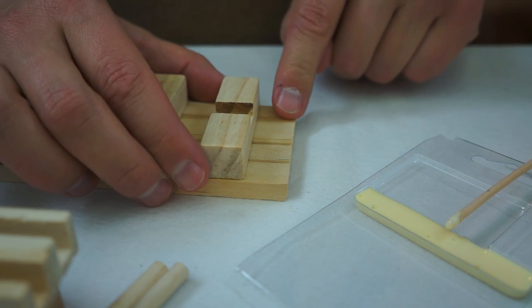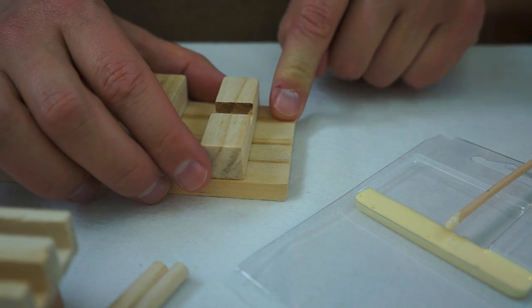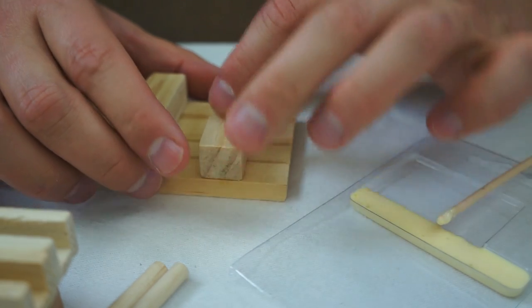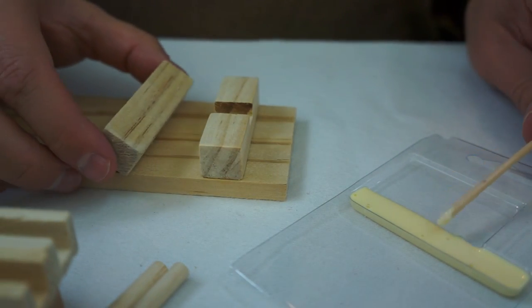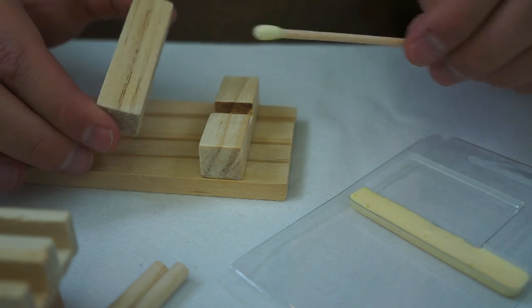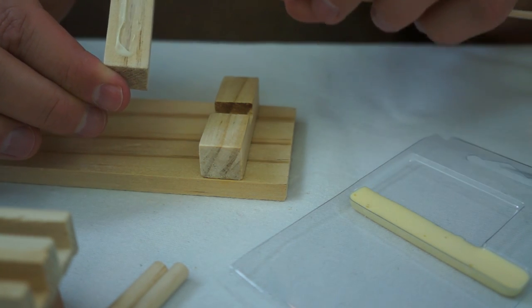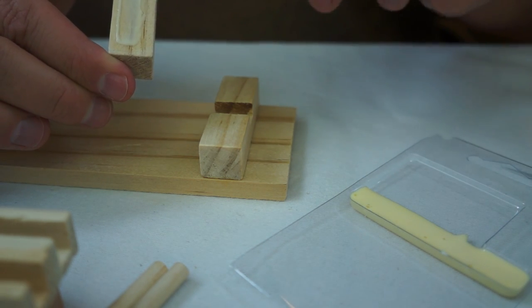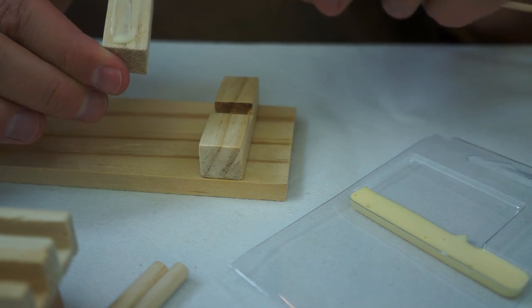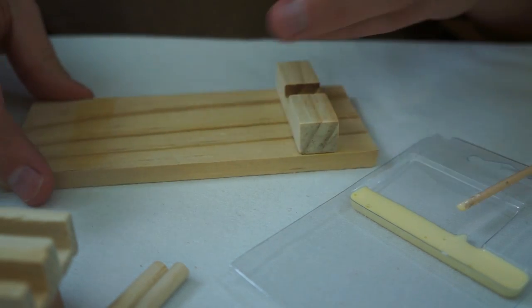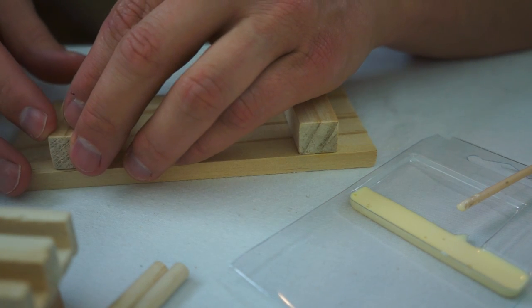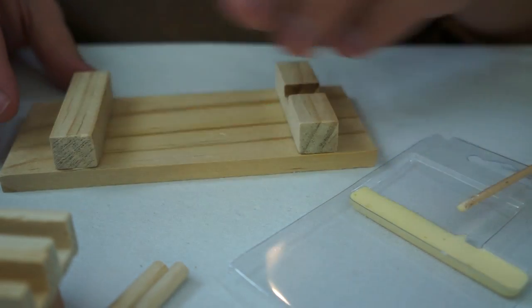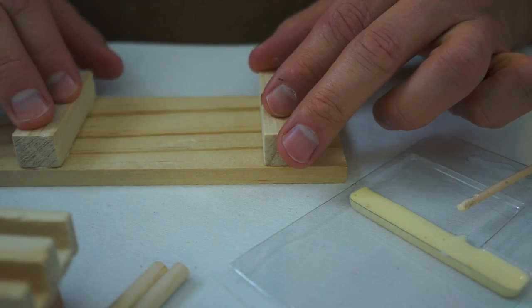And we're going to place that down like that. Make sure it's fairly even and straight. And parallel to the edge because that will determine how our axle fits on our cart. And if it's crooked it won't roll straight. So we'll put another coat here. And we'll place this on this side.